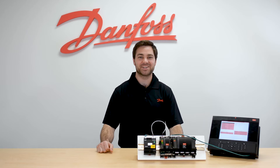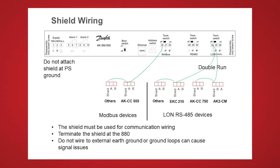The next thing to check for is your shield wiring on your communication loop. As you can see on your screen, the shield needs to be wired across each node and this needs to only be terminated at your 800 system manager. If you terminate this to an external ground somewhere else in the loop, you can create ground voltage, and that will not be good for your communication loop.